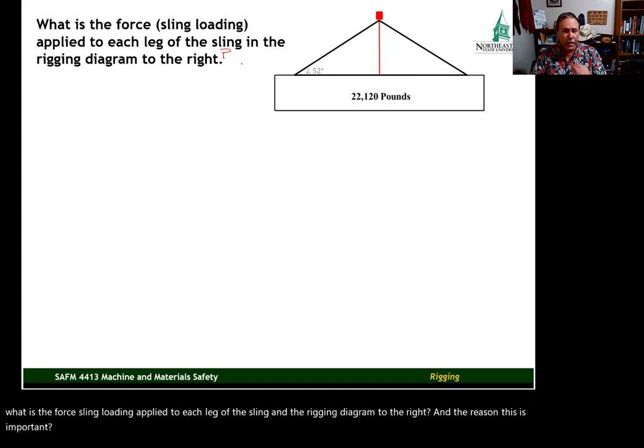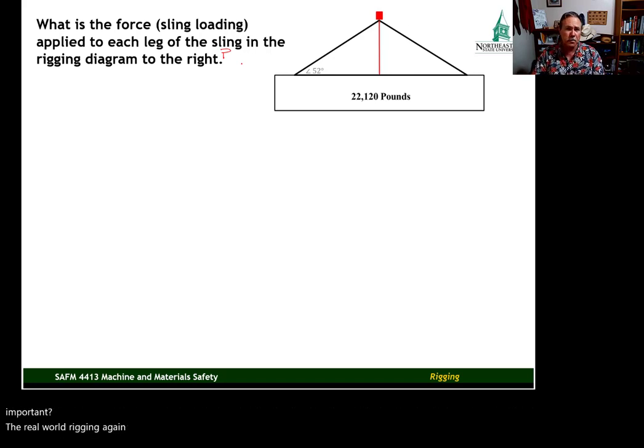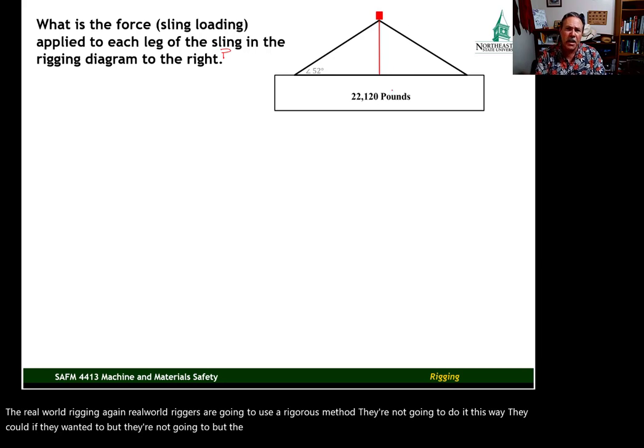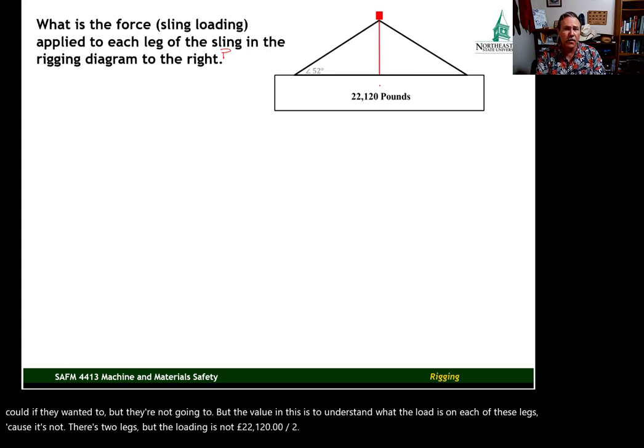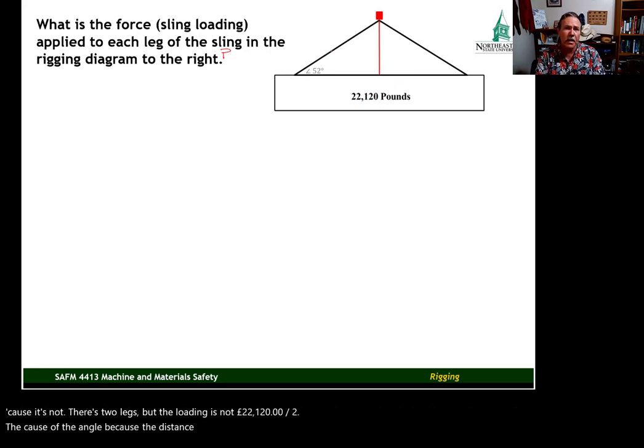And the reason this is important for real world rigging. And again, real world riggers are going to use the riggers method. They're not going to do it this way. They could if they wanted to, but they're not going to. But the value in this is to understand what the load is on each of these legs. Because it's not, there's two legs, but the loading is not 22,120 pounds divided by two. Because of the angle, because of the distance from the center of gravity, the force actually increases above the number of legs times two.